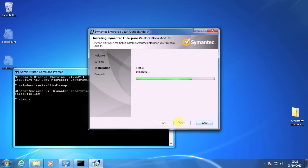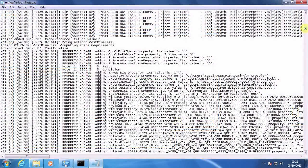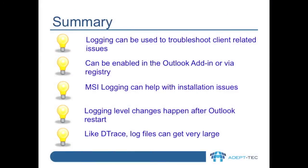Here we see that taking place on this test machine, and after a few minutes of installing we can see the log file on screen. Figuring out the problem from this log file can be quite tricky, and you're likely to need help from Symantec support. In summary, the Enterprise Vault Outlook add-in has built-in logging which can be enabled either via the add-in or via the registry. In addition to this logging, which will help with troubleshooting client-side operations, there is also the option to create an MSI log file, which can help for troubleshooting installation issues.